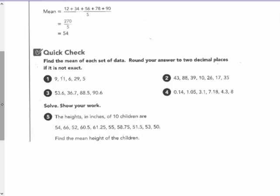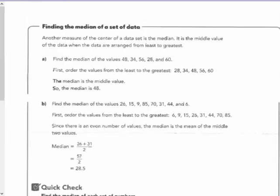On the next page, find the median of a set of data. Another measure of center or central tendency of a data set is the median. It is the middle value of the data when the data are arranged from least to greatest. You could arrange them greatest to least. Generally, it's least to greatest.